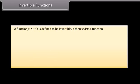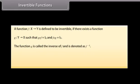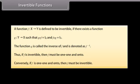Invertible functions. A function f from x to y is defined to be invertible if there exists a function g from y to x such that g∘f = Iₓ and f∘g = I_y. The function g is called the inverse of f and is denoted accordingly. Thus, if f is invertible, then f must be one-one and onto. Conversely, if f is one-one and onto, then f must be invertible.